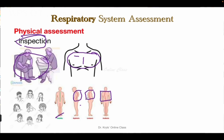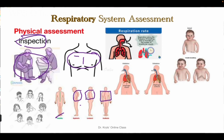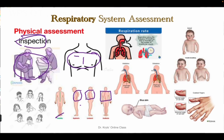Observe the patient's respiration: note the rate, depth, rhythm, and inspiratory-to-expiratory ratio. Look for use of accessory muscles during breathing — do the shoulders rise, is there pursed-lip breathing, or nostril flaring? Also observe the color of the patient's skin, lips, mucous membranes, and nail beds. Check for nail clubbing.